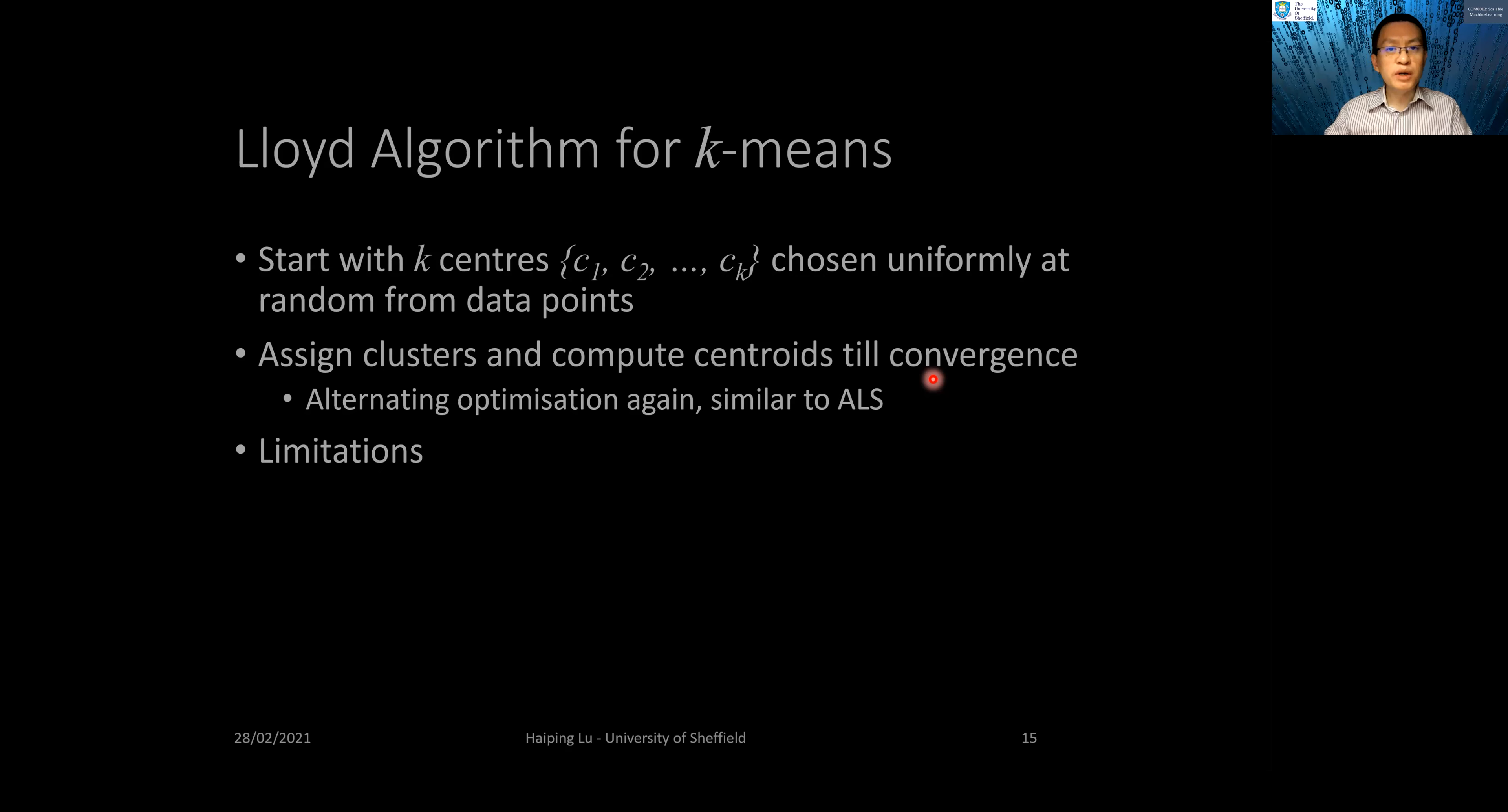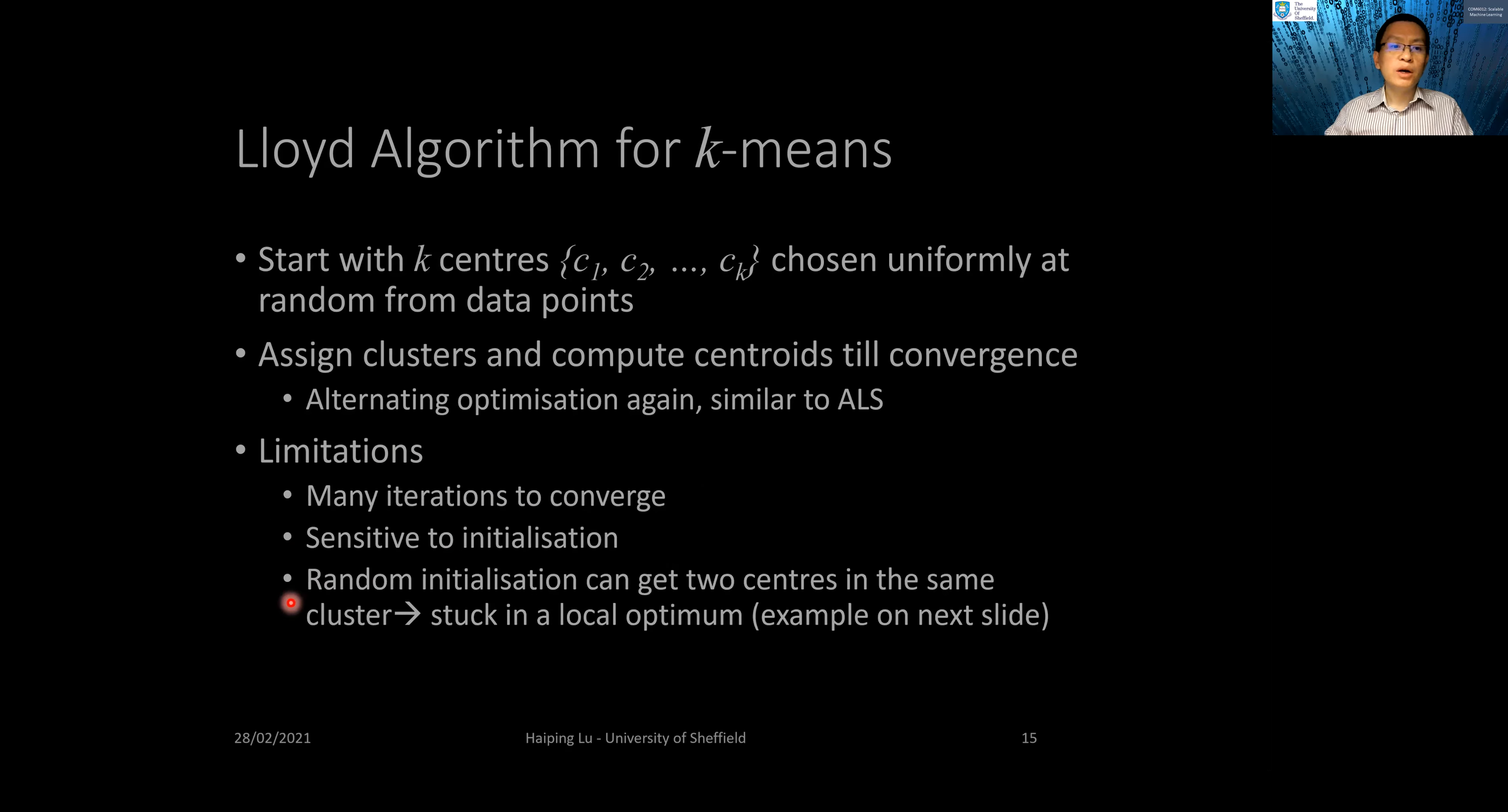There are several limitations for Lloyd's algorithm for k-means. This algorithm typically needs many iterations to converge and is sensitive to initialization. For example, random initialization can place two centers in the same cluster, and in this case, we get stuck at a local optimum.